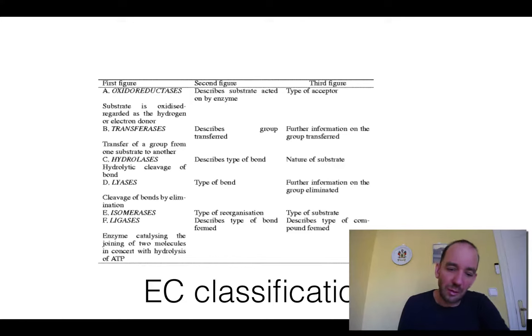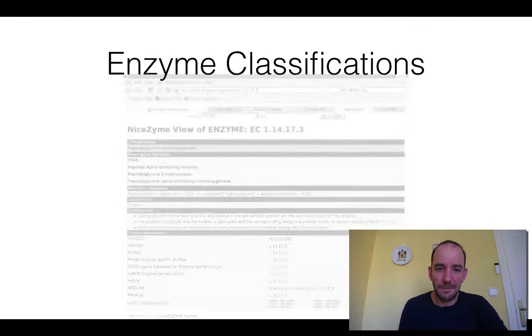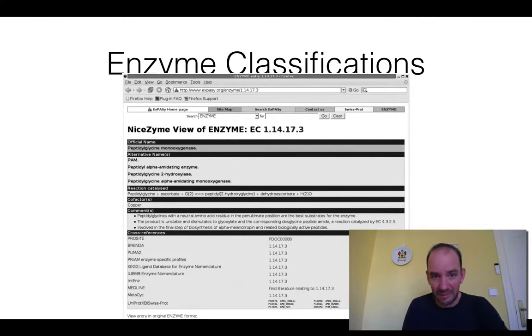It has survived quite well, but it still doesn't really describe all types of enzymes. The database still exists, so you can look up the EC classification, get a number, and it's quite useful to describe enzymes.